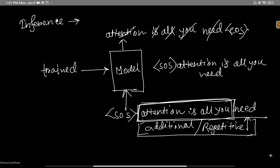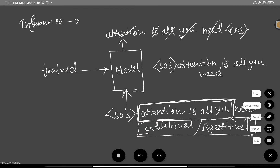We don't need to repeatedly do the query-key-value multiplication: the Q·K^T multiplication, then the V multiplication, dividing by the square root of dimension d, and taking the softmax. There are a lot of steps in this process, and many things we can cache. That's why the concept of KV cache comes in — to reduce computation and eliminate repetitive tasks in the vanilla transformer architecture from the 'Attention Is All You Need' paper.